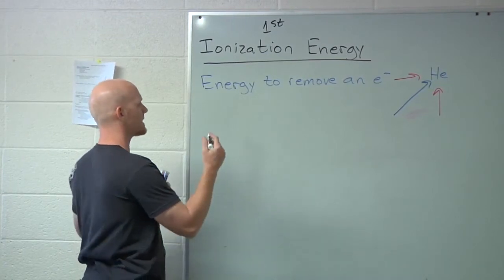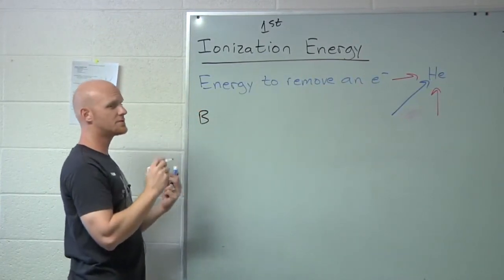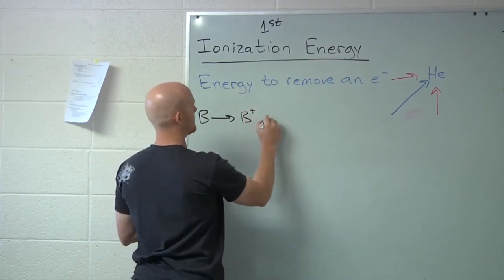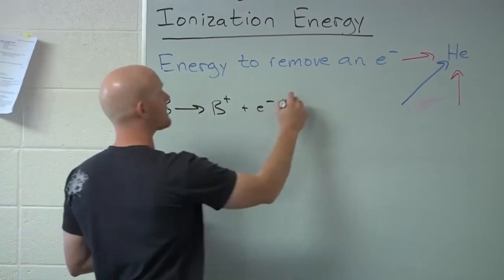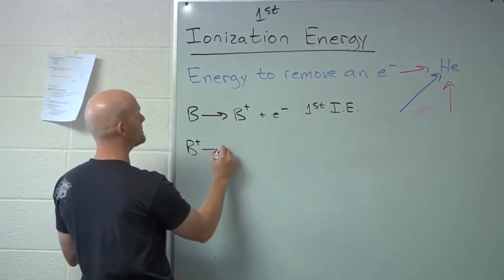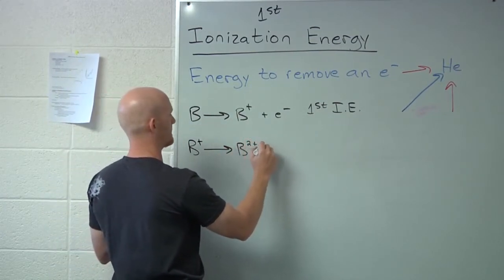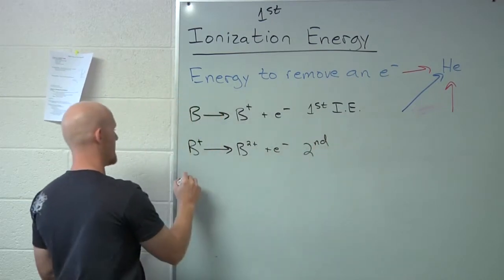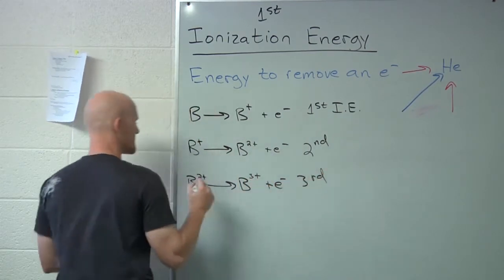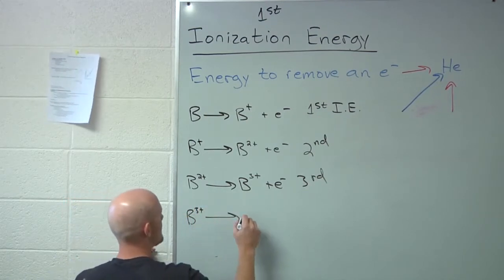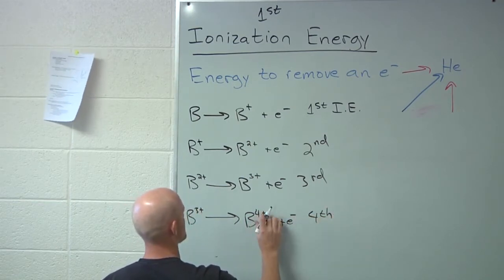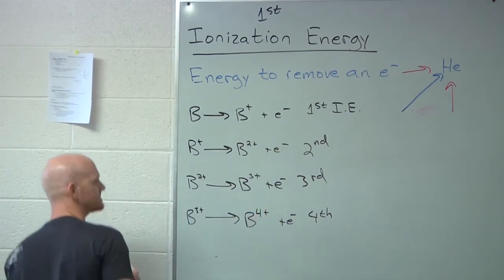If you look at something like boron, if you remove an electron from boron, you take away its electron, and now it has plus one charge. That would be the first ionization energy. But what if I then took that boron ion and I removed another electron? It would have plus two charge. That would be the second ionization energy. And then if I removed another electron, plus three charge. That would be the third ionization energy. And then finally, if I took another one away, plus four. That would be the fourth ionization energy.